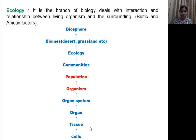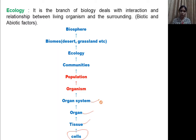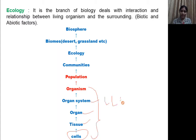Each and every living organism is made up of cells. The cell is the structural and functional unit of life. A group of cells is called tissue, a number of tissues combine to form an organ, and a number of organs combine to form an organ system. Two or more organ systems form a body, which is called an organism.